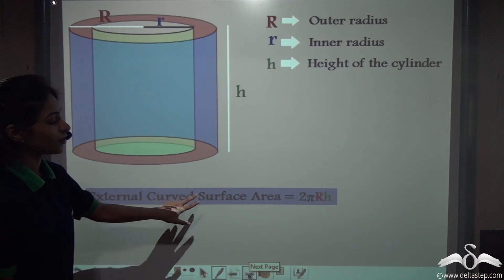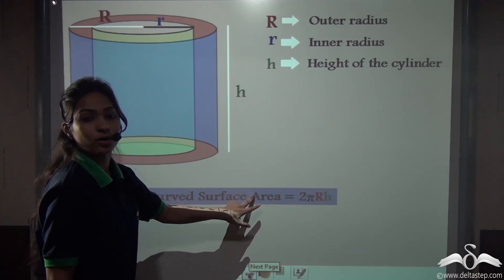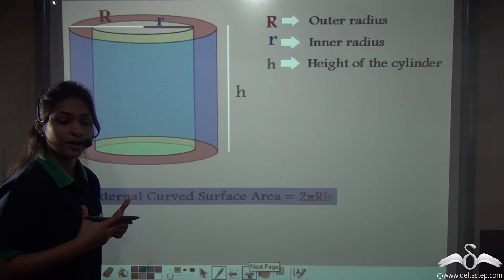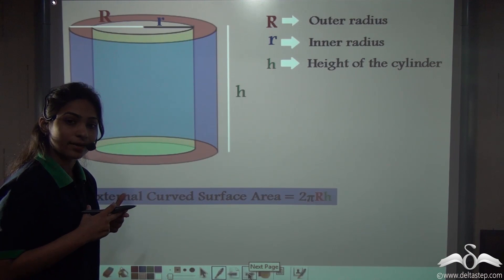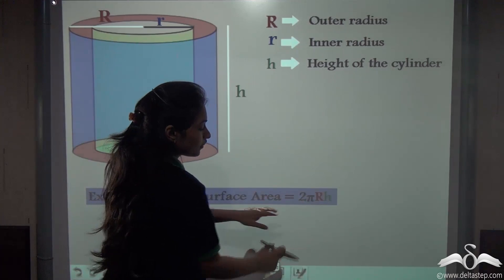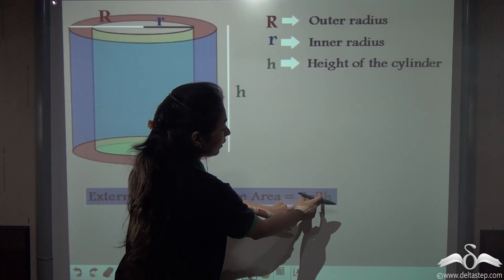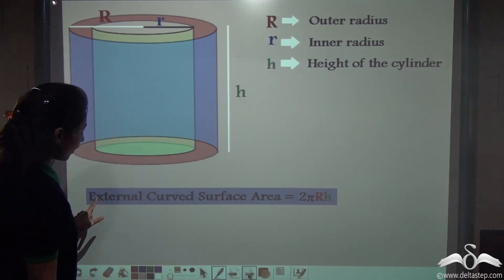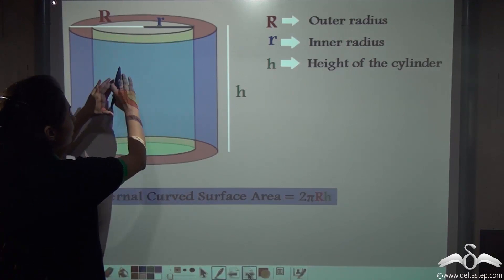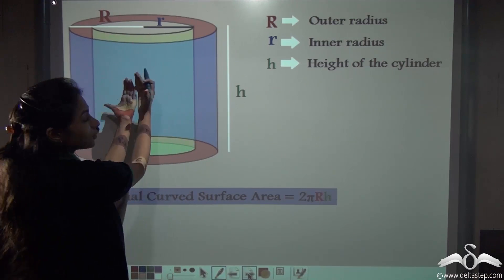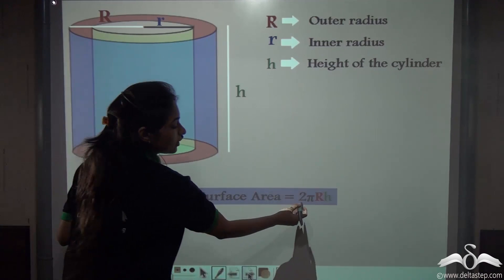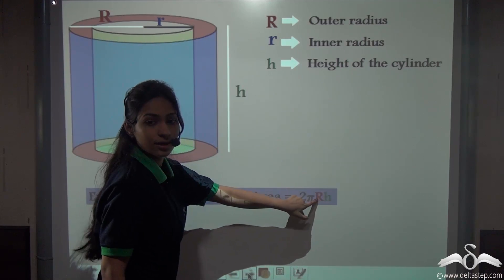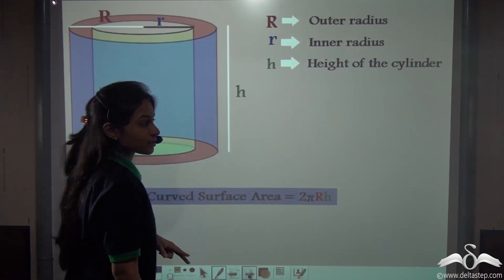Now, the external curved surface area will be calculated using the formula for a curved surface area of a cylinder, which is 2πRh. Here we use capital R because we have to find the external curved surface area — that is, the outer curved surface area. So that is 2πRh, where R is the capital R, the outer radius.